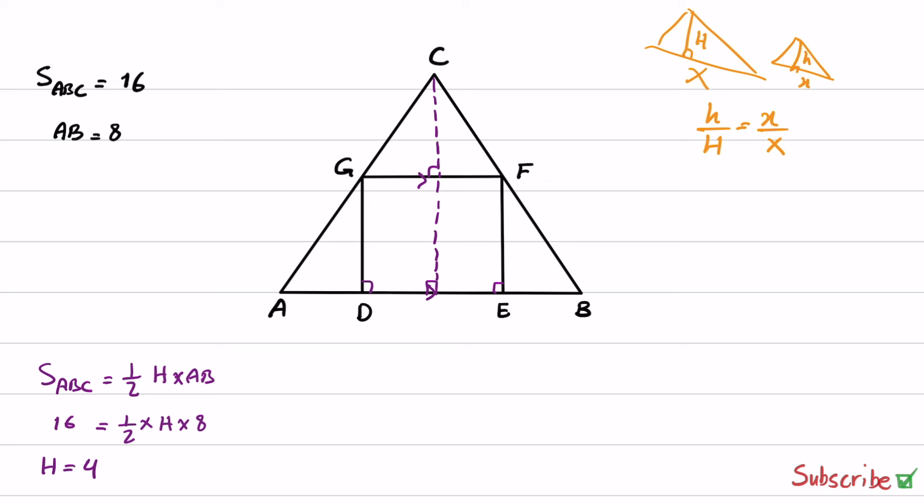Now, if I show the side of the square with Y, this part is also going to be Y. All these sides are Y. This part is going to be height minus Y. So this is 4 minus Y. And now if we apply this relation...